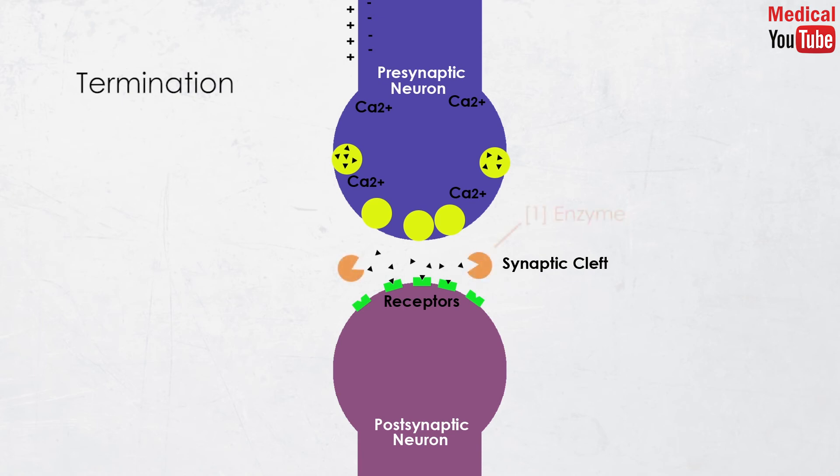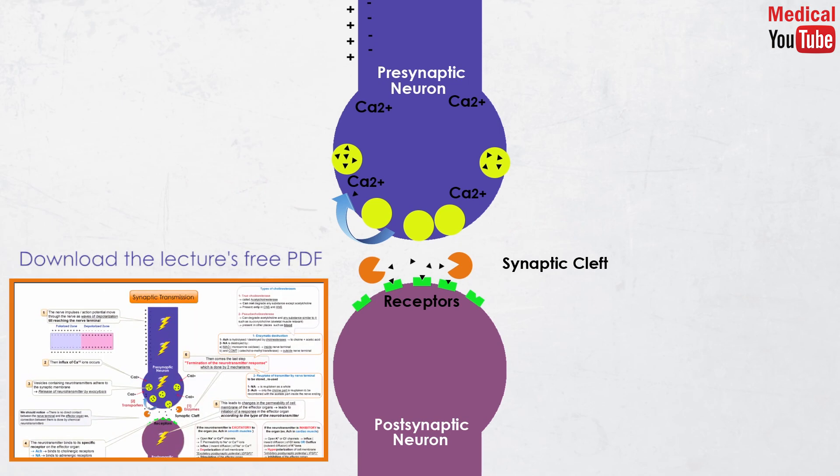Termination can be done by two mechanisms. The first is enzymatic destruction of the neurotransmitter at the synapse, and the second mechanism is the reuptake of transmitter by specific transporters at the nerve terminal to be stored and reused. That's all for this lecture.